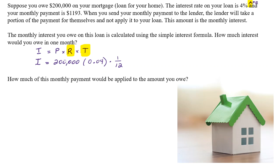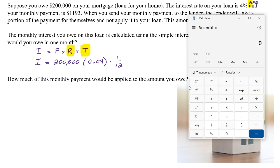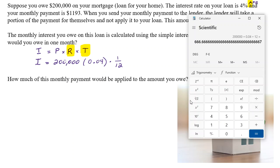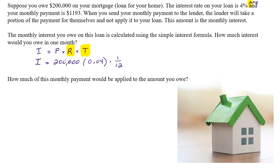Let's see how much interest this person is going to owe. We take $200,000 times four percent, which is 0.04, times one-twelfth — you could go times one divided by 12, or you could just divide by 12; that's the same thing. And we get $666.67. That is the amount of interest that you owe in one month.